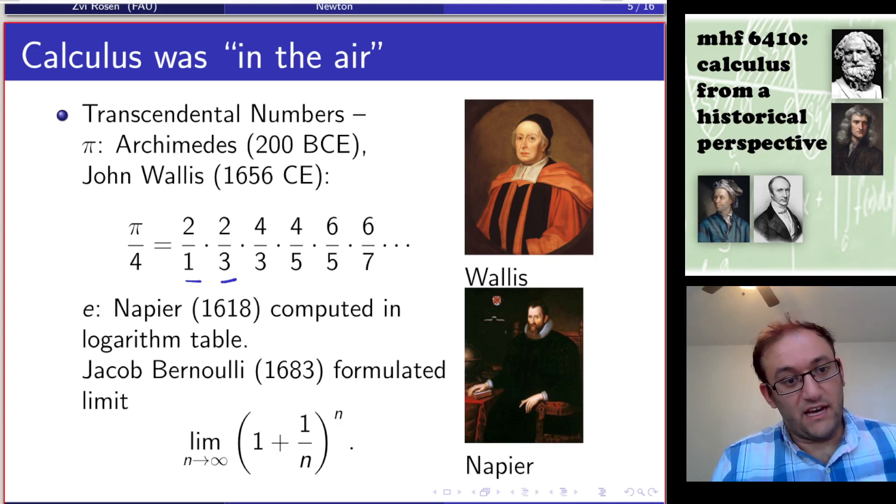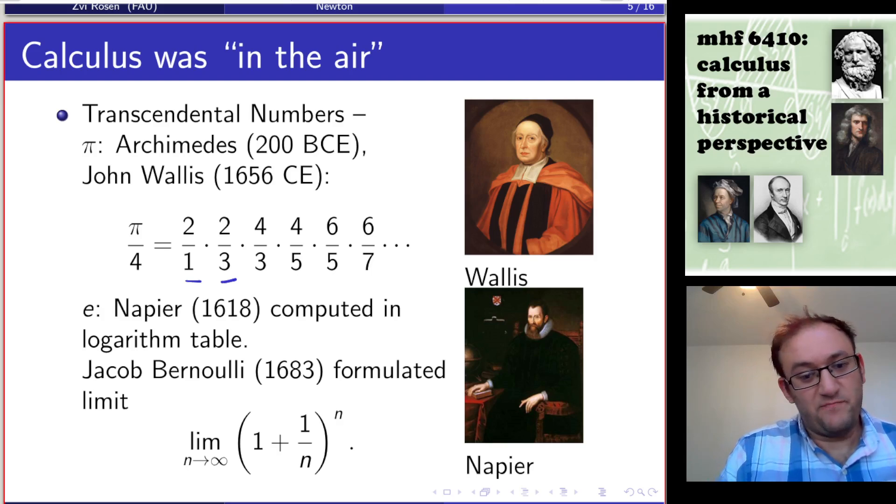Similarly, E. John Napier, in the early part of the 17th century, wrote a book on logarithms and computed logarithm tables which also included e. But the first person to really call attention to e as an important constant was Jacob Bernoulli in 1683, who formulated it in terms of the limit as n approaches infinity of 1 plus 1 over n to the n. Neither Newton or Leibniz could be given credit for starting to work with e.